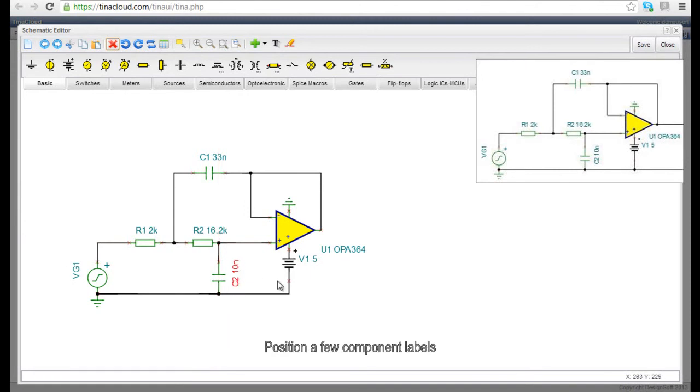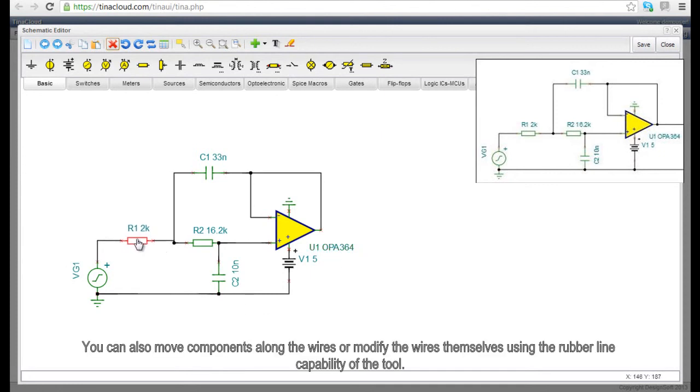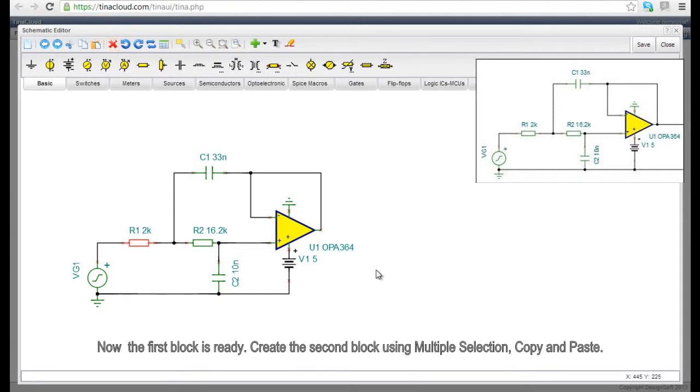Position a few component labels. You can also move components along the wires or modify the wires themselves using the rubber line capability of the tool. Now the first block is ready.